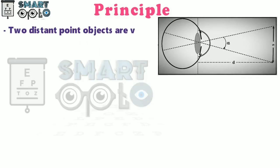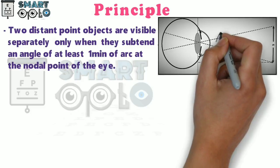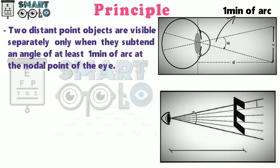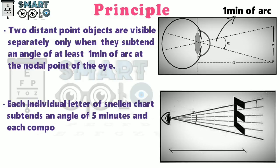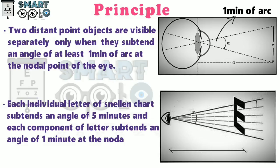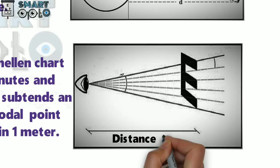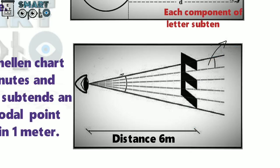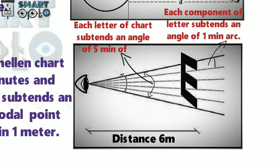Two distant point objects are visible separately only when they subtend an angle of at least one minute of arc at the nodal point of the eye. Each individual letter of Snellen's chart subtends an angle of five minutes, and each component of a letter subtends an angle of one minute at the nodal point of the eye from a distance of one meter. This angle shows each component subtending one minute arc, and this angle shows the letter subtending five minutes of arc.